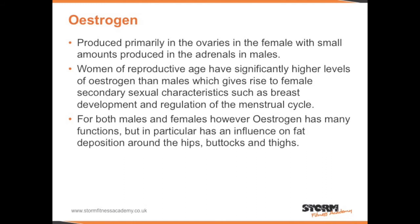Estrogen is produced primarily in the ovaries in the female, with a small amount produced in the adrenals in males. Women of reproductive age have significantly higher levels of estrogen than males, which gives rise to female secondary sexual characteristics such as breast development and regulation of the menstrual cycle. For both males and females, estrogen has many functions, but in particular has an influence on fat distribution around the hips, buttocks, and thighs.